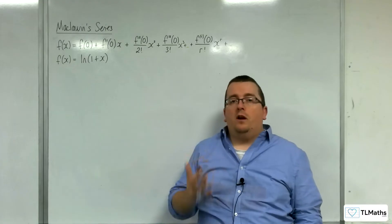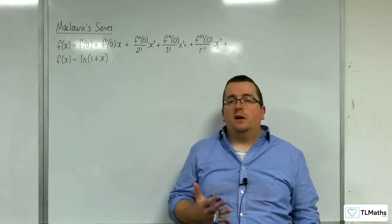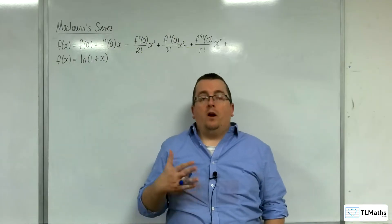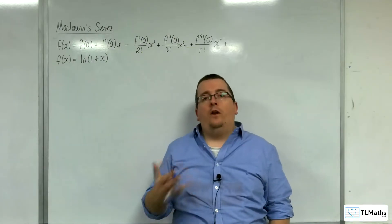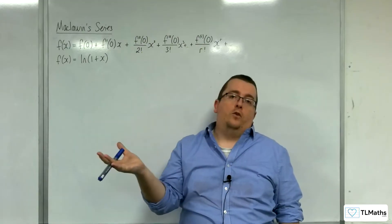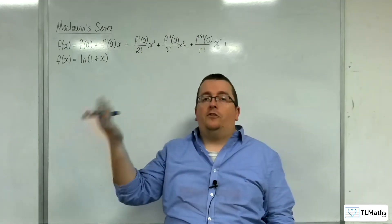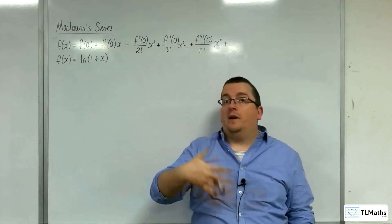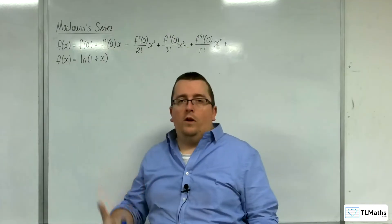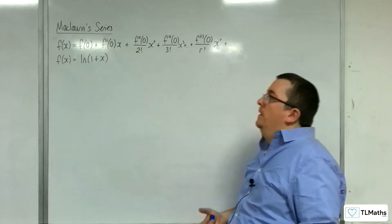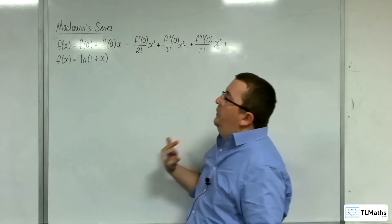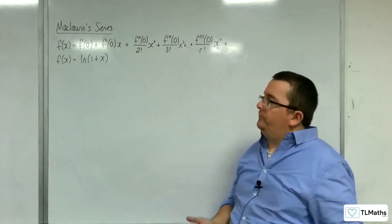Unfortunately, you can't find the Maclaurin series of log x because you can't evaluate log of 0. And likewise, if you differentiate log x to get 1 over x, you can't evaluate that at 0 either. So you can't work with that. Instead, we look at log of 1 plus x.